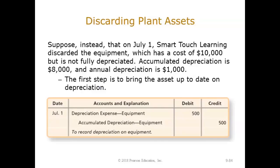Now, let's say we're actually going to sell the asset. In this case, we've got a cost of $10,000, but it's not fully depreciated. The accumulated depreciation is $8,000 and the annual depreciation is $1,000. We have to bring the asset up to date for depreciation. On July 1, we figure out half a year's depreciation — half of $1,000 is $500. So we debit depreciation expense for $500 and credit accumulated depreciation for $500.